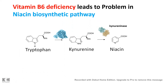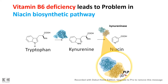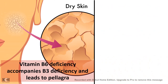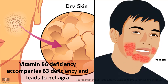Vitamin B6 deficiency always accompanies vitamin B3 deficiency, because niacin (vitamin B3) is produced from tryptophan via several enzymatic steps. At the last step, kynurenine is converted to niacin by the enzyme kynureninase, which requires PLP as its coenzyme. Without PLP, niacin biosynthesis is also impaired. Both B6 and B3 deficiencies are correlated and can lead to pellagra, characterized by dry, scaly skin and inflammation or rashes near the facial region.